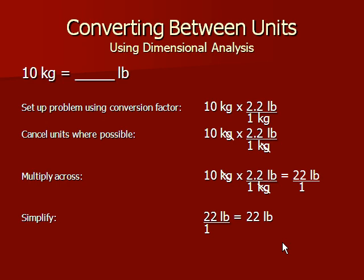Next, we will use dimensional analysis. We want to calculate how many pounds are equivalent to 10 kilograms. We have a known conversion factor of 1 kilogram to 2.2 pounds. Begin with the unit you want to change — 10 kilograms — then multiply it by the known conversion factor. Since we want the unit of kilograms to cancel out, we will put 1 kilogram in the denominator of the conversion factor and 2.2 pounds in the numerator. Cancel the units where possible, multiply across, then simplify.